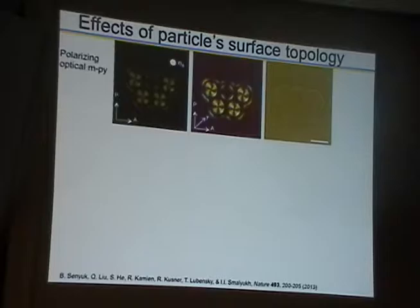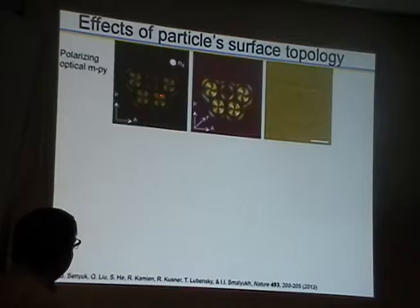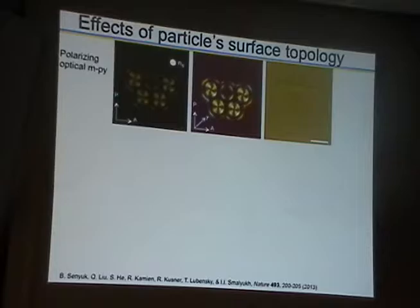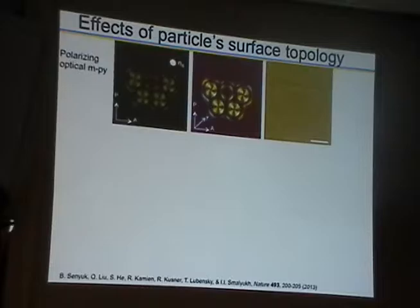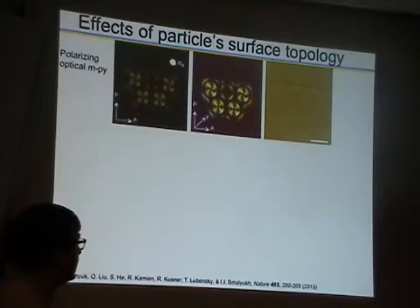Now let's see what happens if we introduce particles with different topologies. Here we have a colloidal particle with five holes, meaning the genus of this surface is five. The boundary conditions on the particle surface are perpendicular. We can see that we do induce topological defects — both point defects and ring-shaped disclinations — as we introduce this particle, observed here between cross-polarizers with and without retardation plates, and also in a microscope without polarizers.